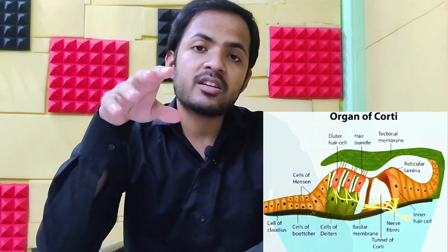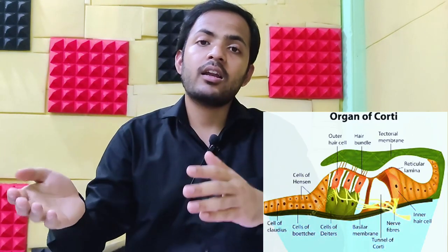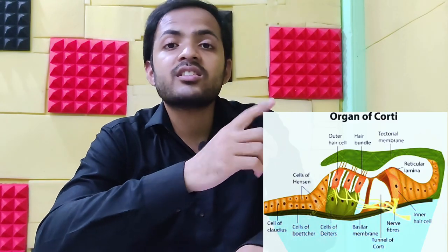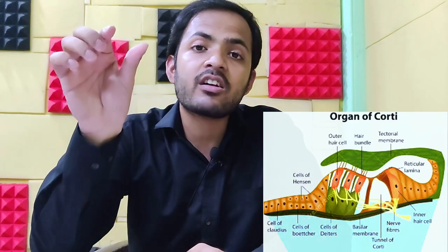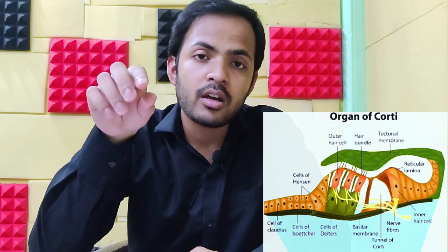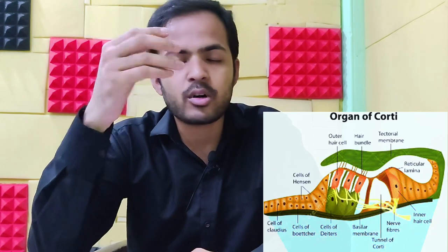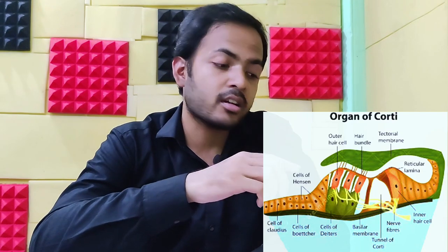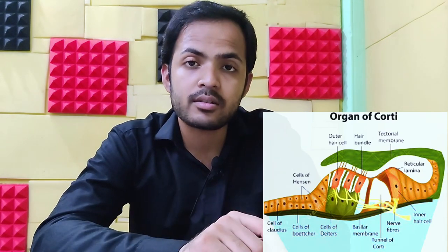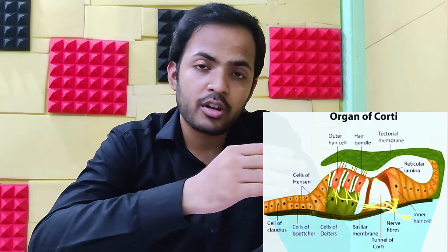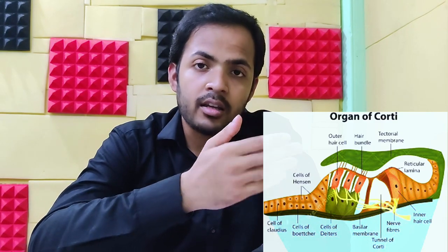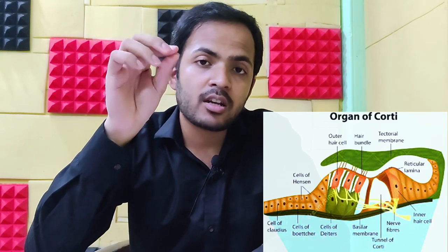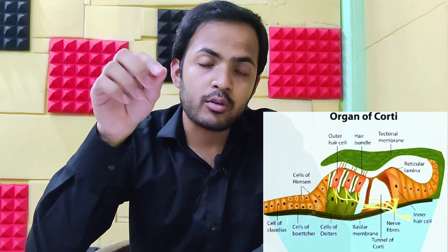These hair cells are basically supported by inner and outer pillar cells. Now in this organ of Corti, along with these hair cells, you can also see the Deiters cells, or Boettcher cells. Above these Boettcher cells you can see a layer of Claudius cells. These cells also support the auditory hair cells — the inner and outer hair cells — and they contain aquaporin channels, which are special channels for water molecules and ions.